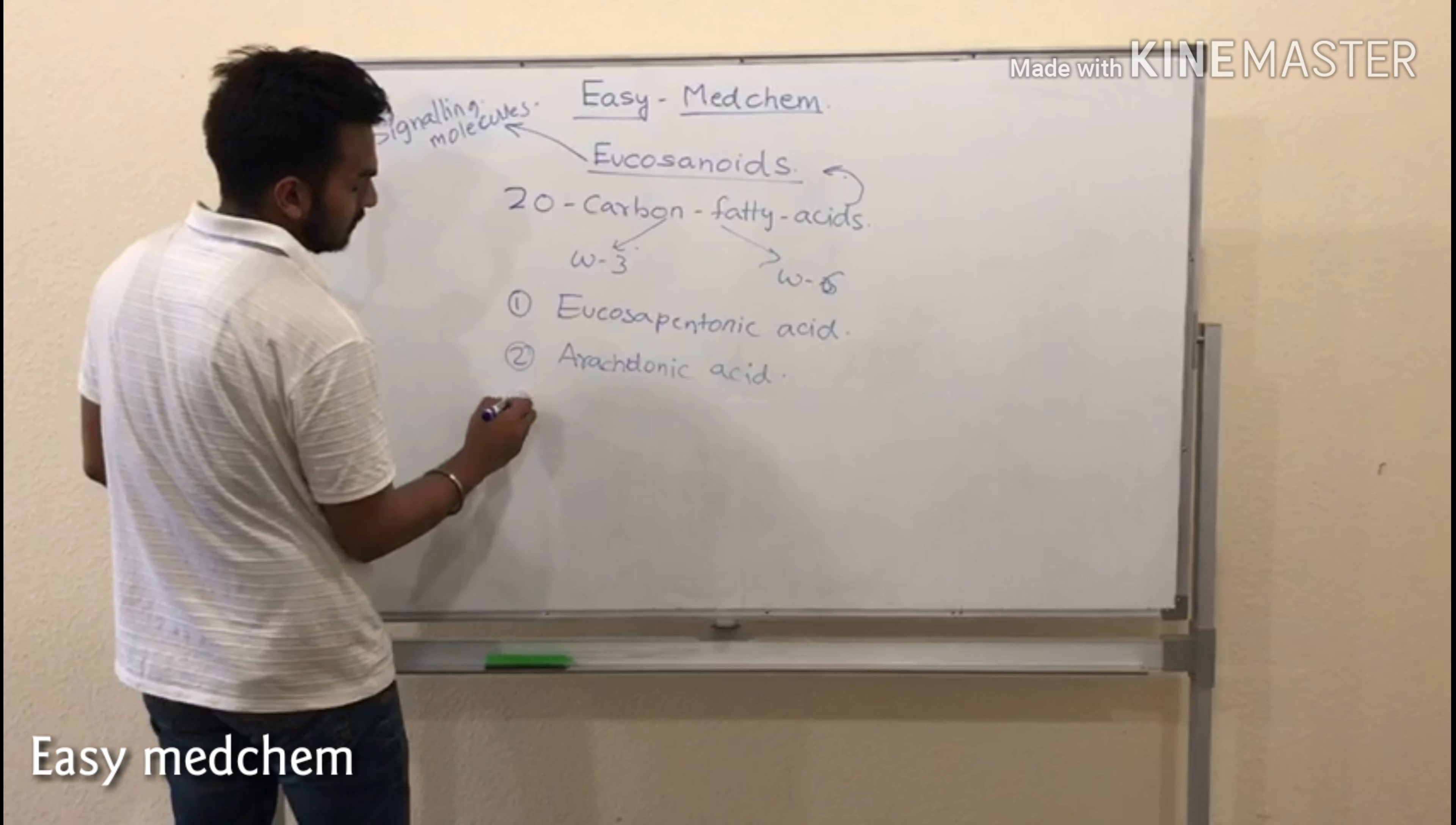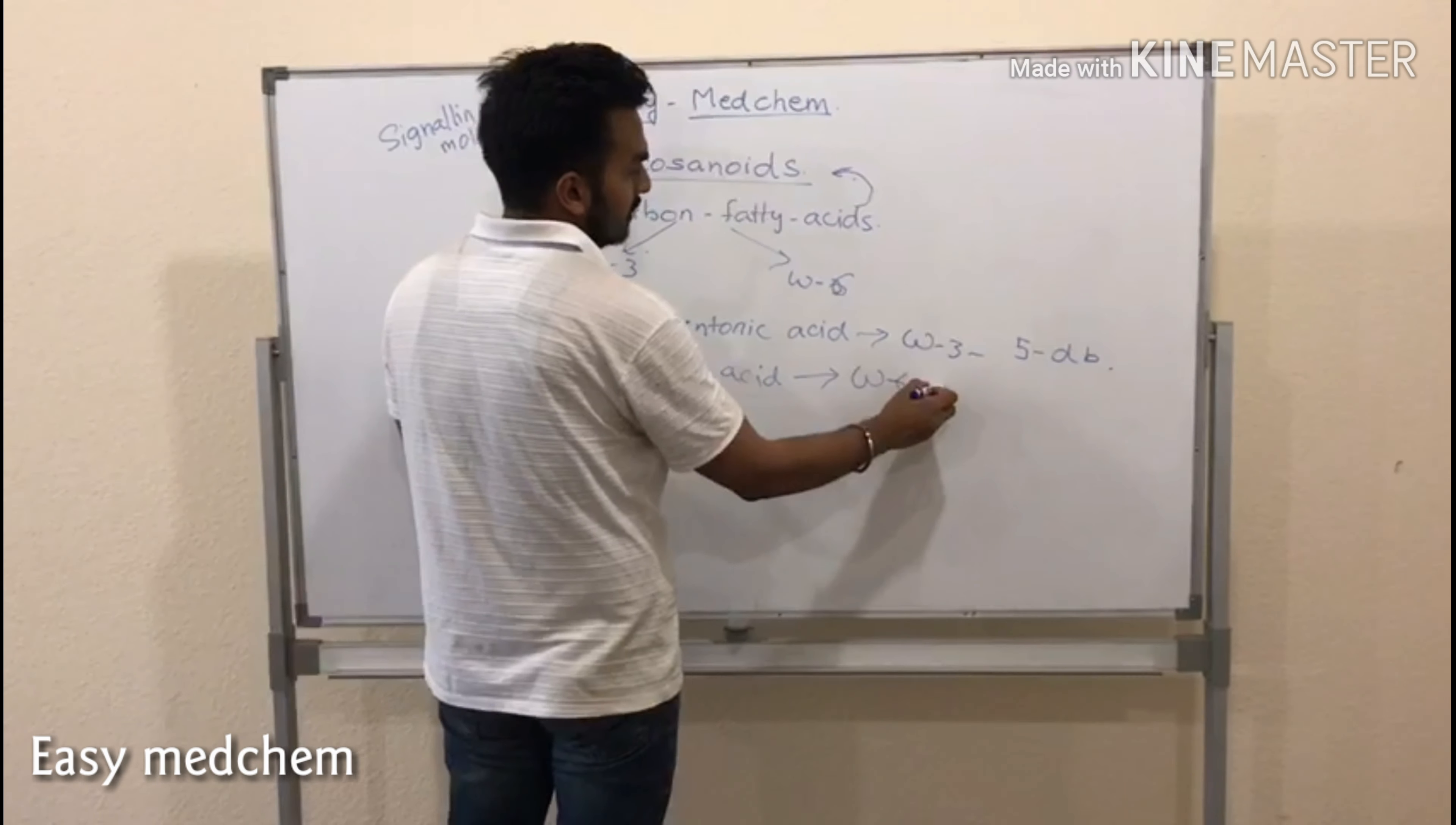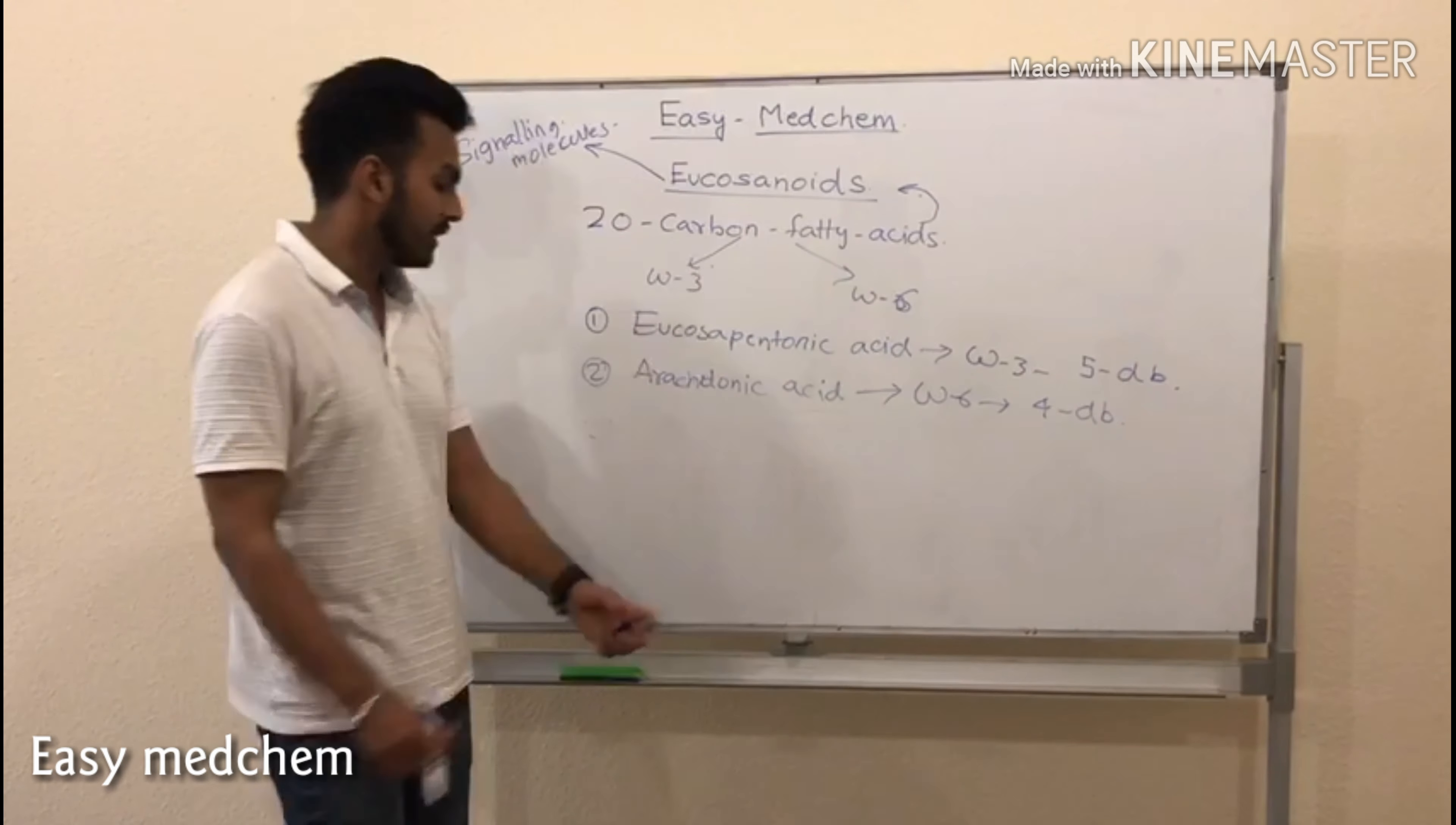And arachidonic acid is formed by the omega 6 fatty acids with four double bonds. These are some of the eicosanoids which are medically important. They are signaling molecules and they are 20 carbon fatty acids, either omega 3 or omega 6.